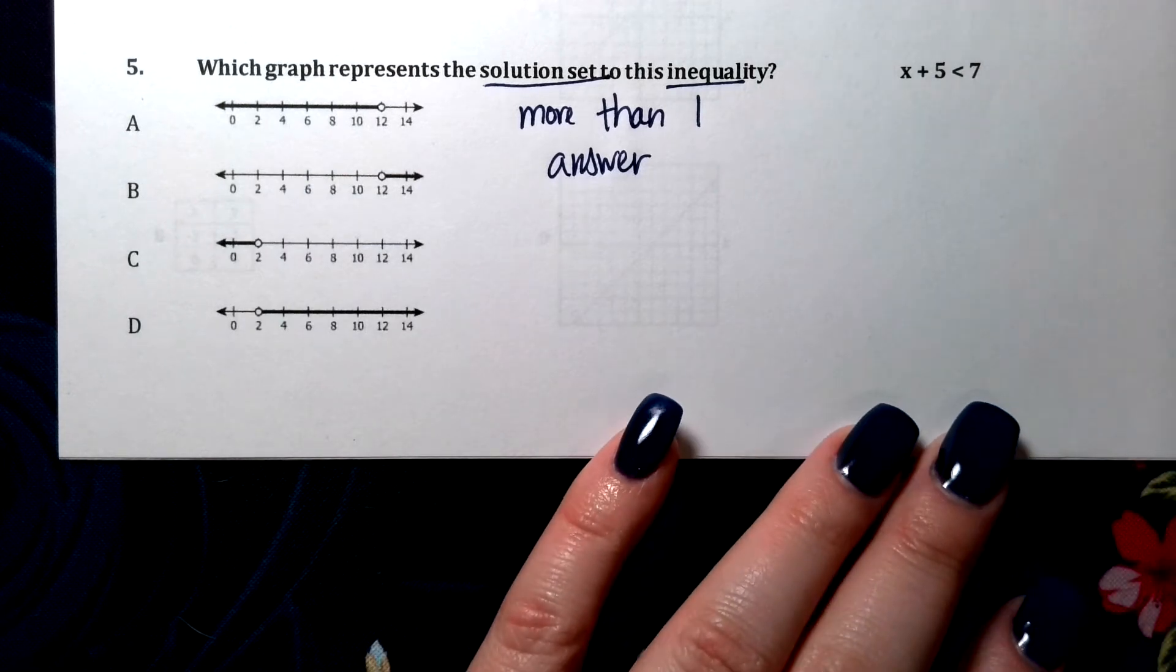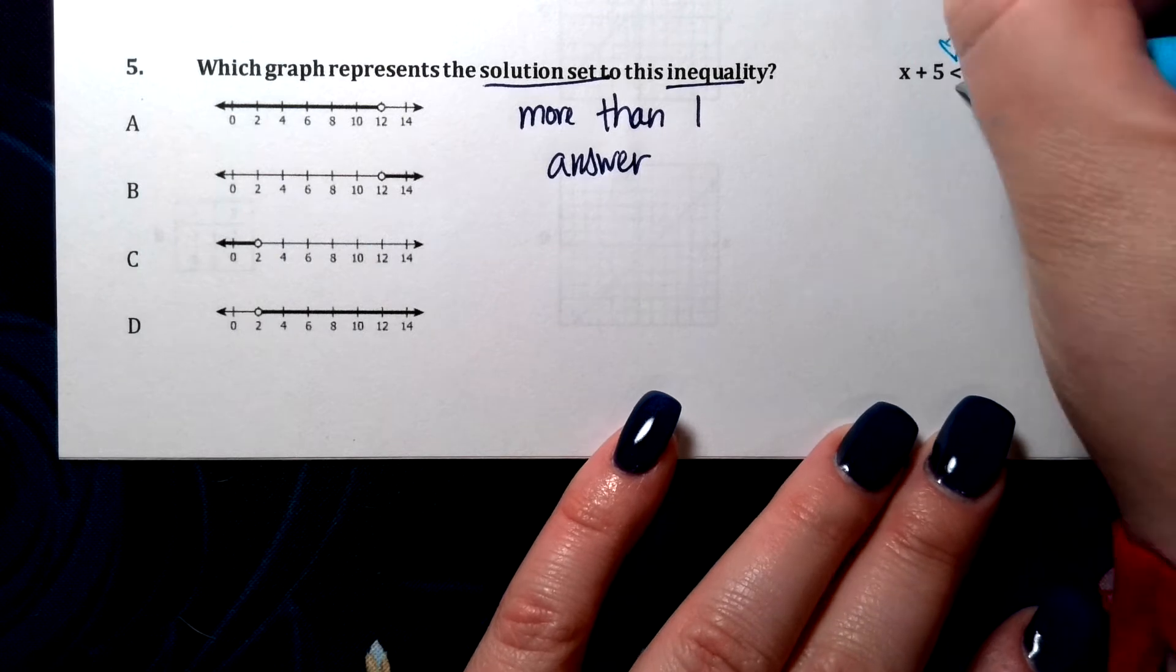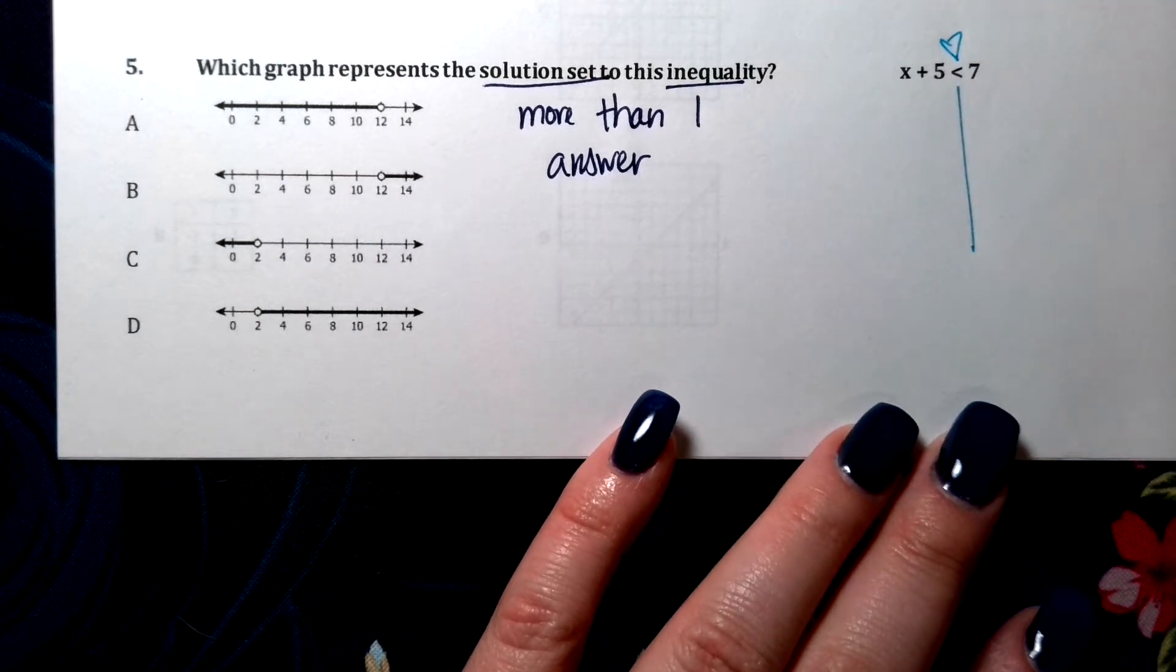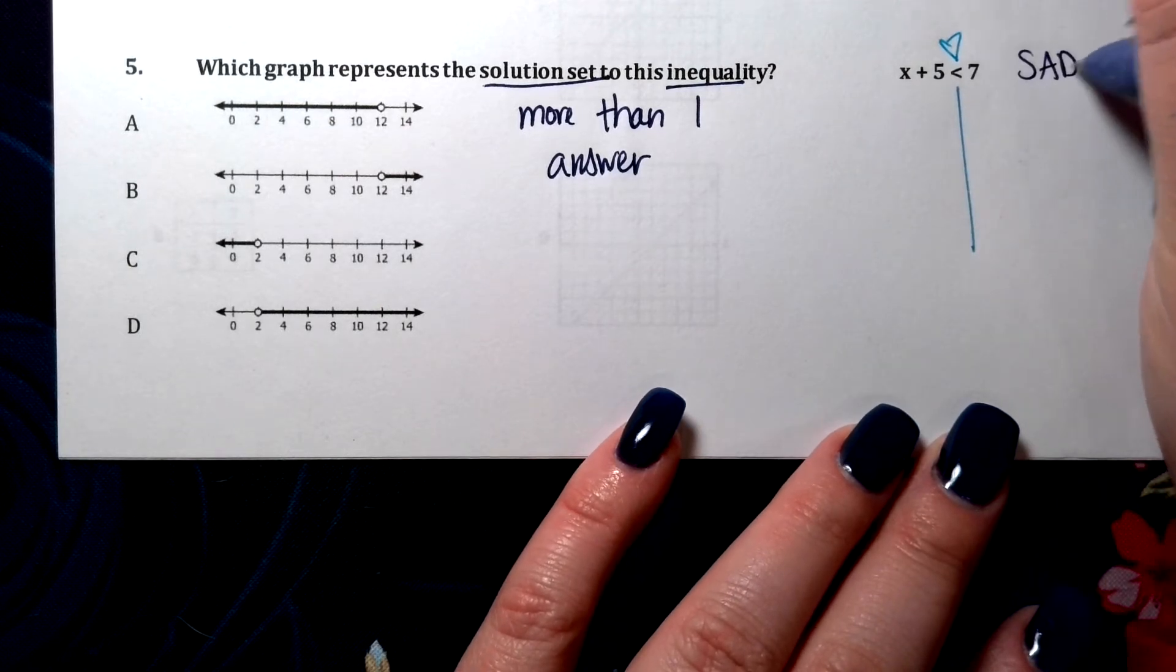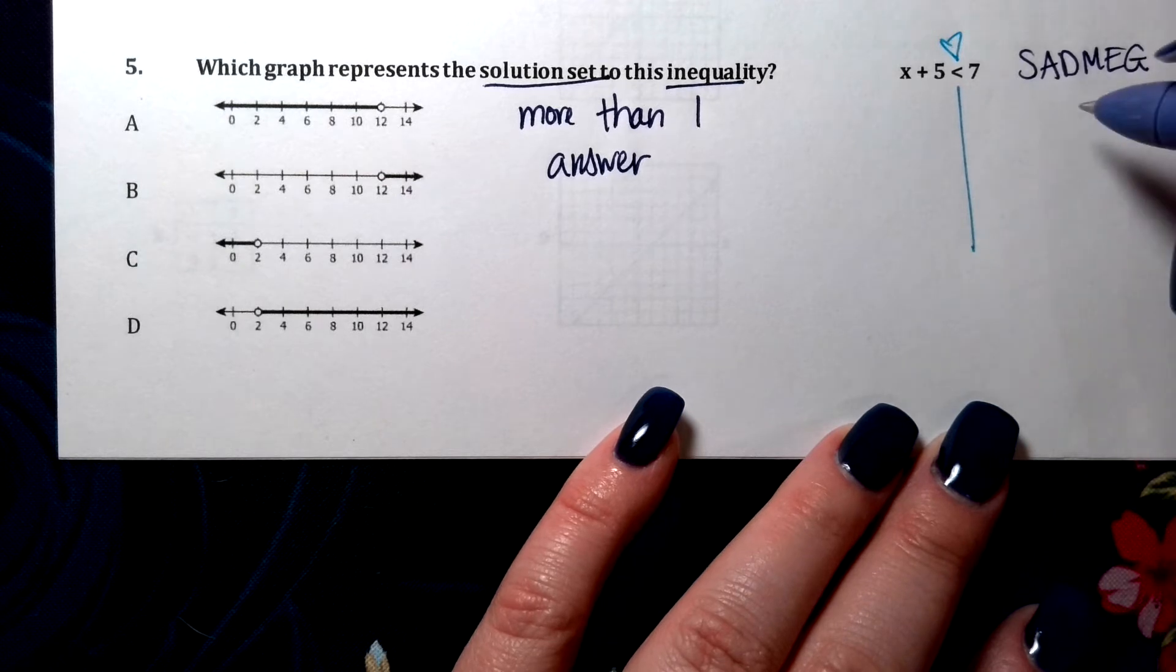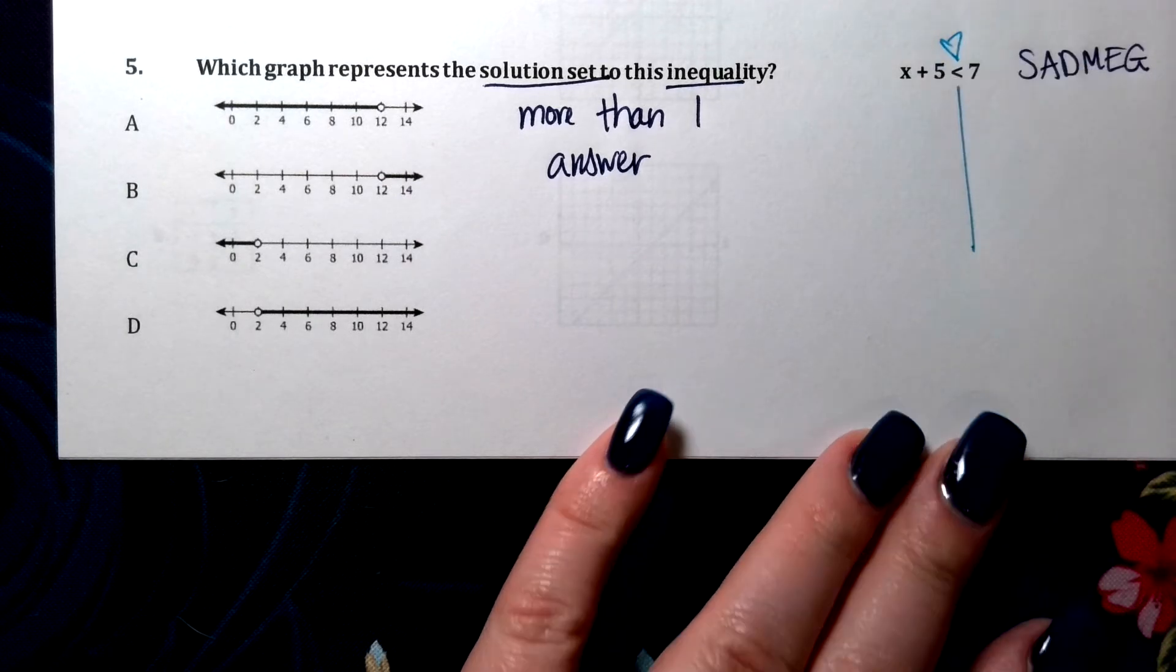So we do our river of love again, or your train tracks, whatever you like. And then, again, we're doing sad meg. GemDOS backwards, because we're working backwards to figure out what x is.